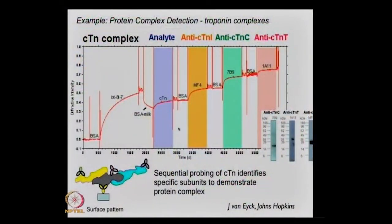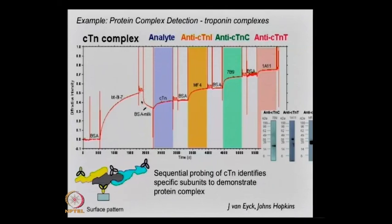Here's an example of troponin detection — being able to detect a complex system. This is the work of Professor Jenny Van Eyck at Johns Hopkins, again using the commercial instrument. On the surface you put down the antibody, the anti-troponin. Troponin is a complex that has three parts, and you can identify whether all three parts are present — or in what amount — by putting an antibody for each of the parts of troponin and measuring the response. It's almost a multiplex assay, except it's all on the same protein. At each point here is the introduction of another thing — the troponin, then all the different antibodies to the different parts of it.